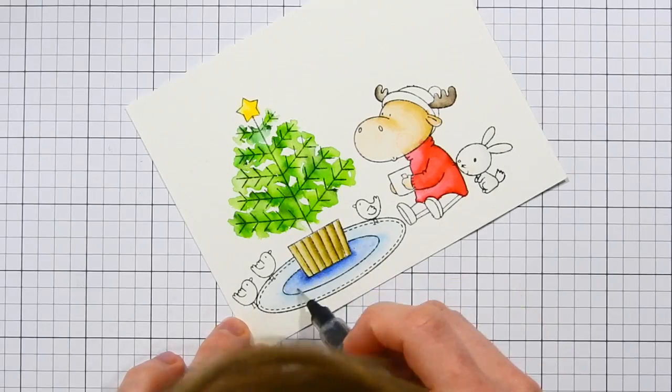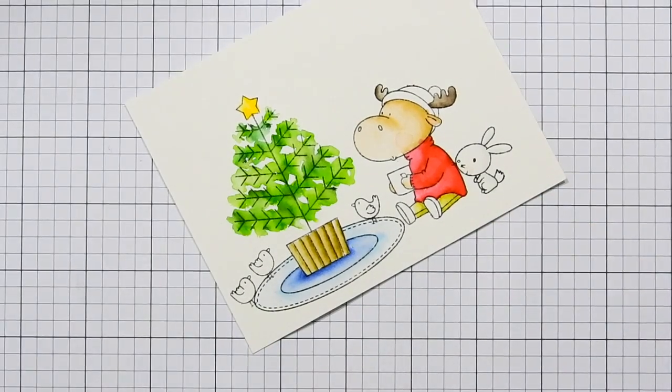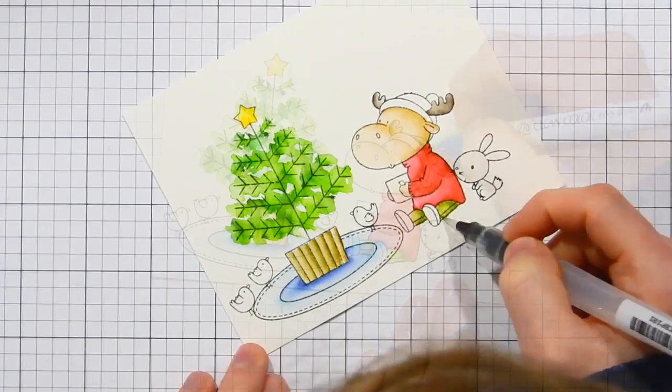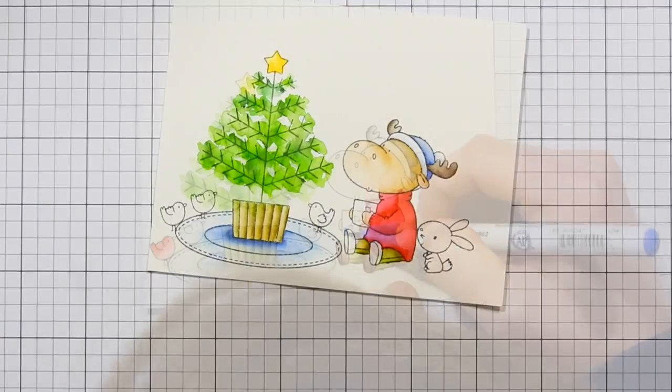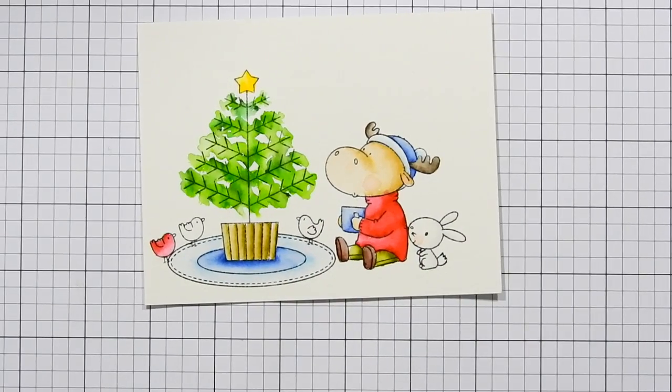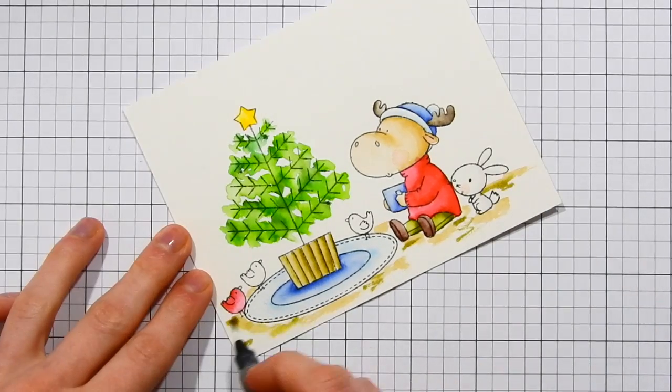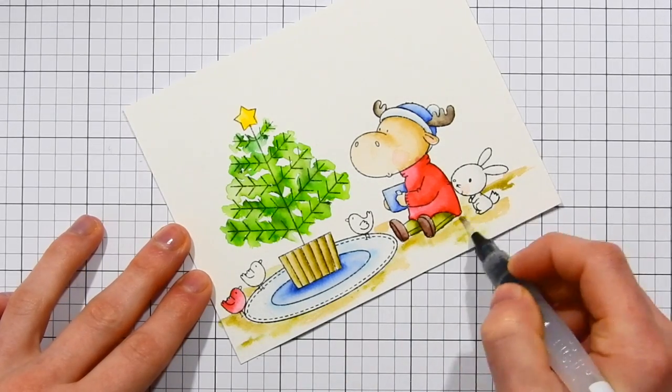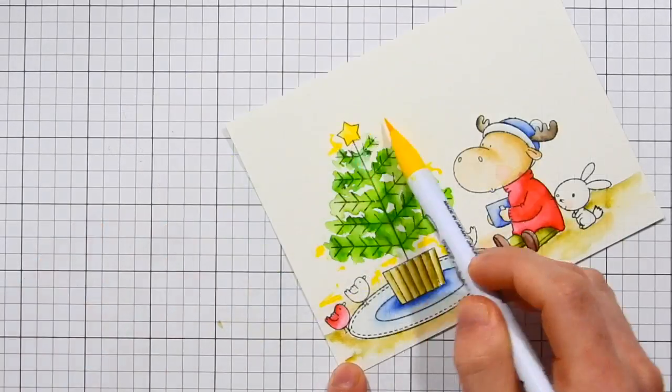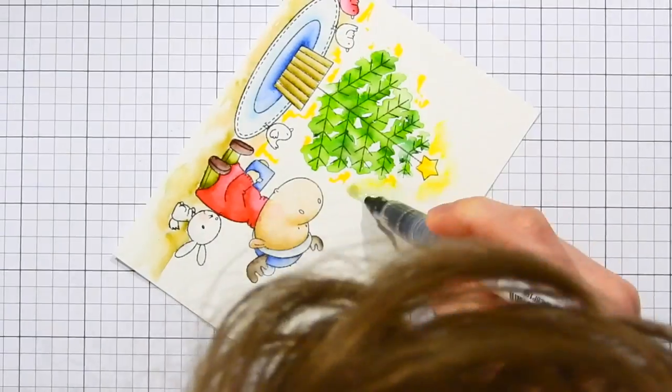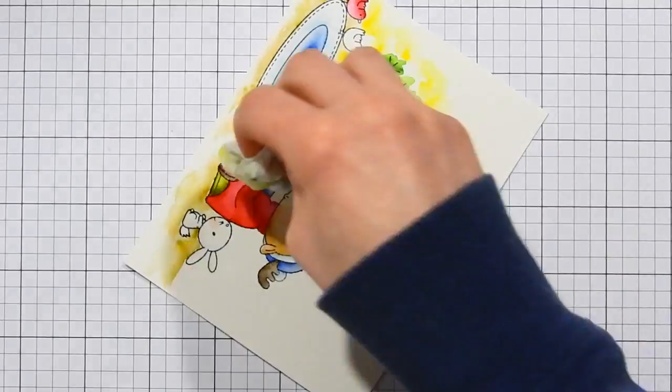But when I do the shading I add the darkest coloring along the areas where I want it to be darkest, and if I needed to go a little darker I'll just overlap it with another layer of that same color. But I don't need to use multiple markers which makes for an easy amount of coloring because you don't have to worry about having lots of markers or having lots of markers out on your desk if you do have a lot of these Zig Clean Color markers.